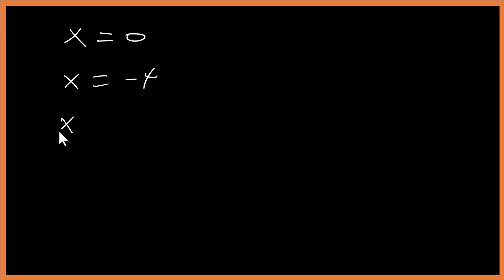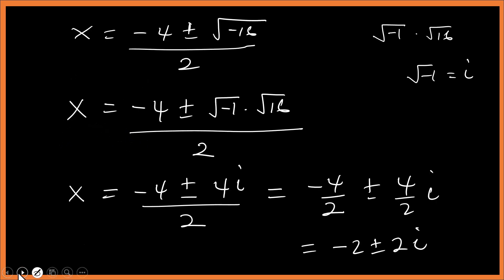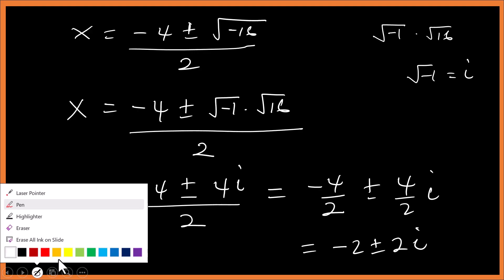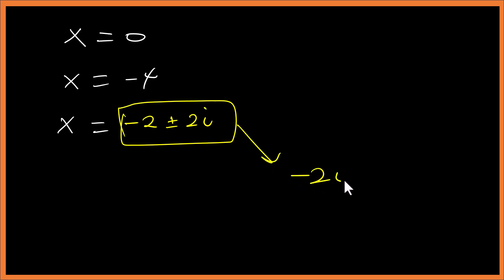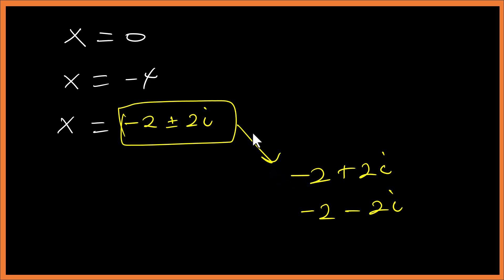So we have four answers: x = 0, x = −4, x = −2 + 2i, and x = −2 − 2i.